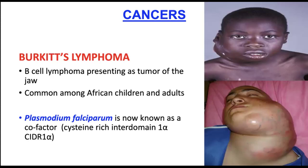So the B cells become abnormal and cannot function properly. When Epstein-Barr virus also infects these cells, the combination results in Burkitt's lymphoma. The patient who already has malaria and then gets Epstein-Barr can develop Burkitt's lymphoma. In summary, Burkitt's lymphoma is caused by a coexisting infection by Plasmodium falciparum, via its CIDR1-alpha, and Epstein-Barr virus working together.